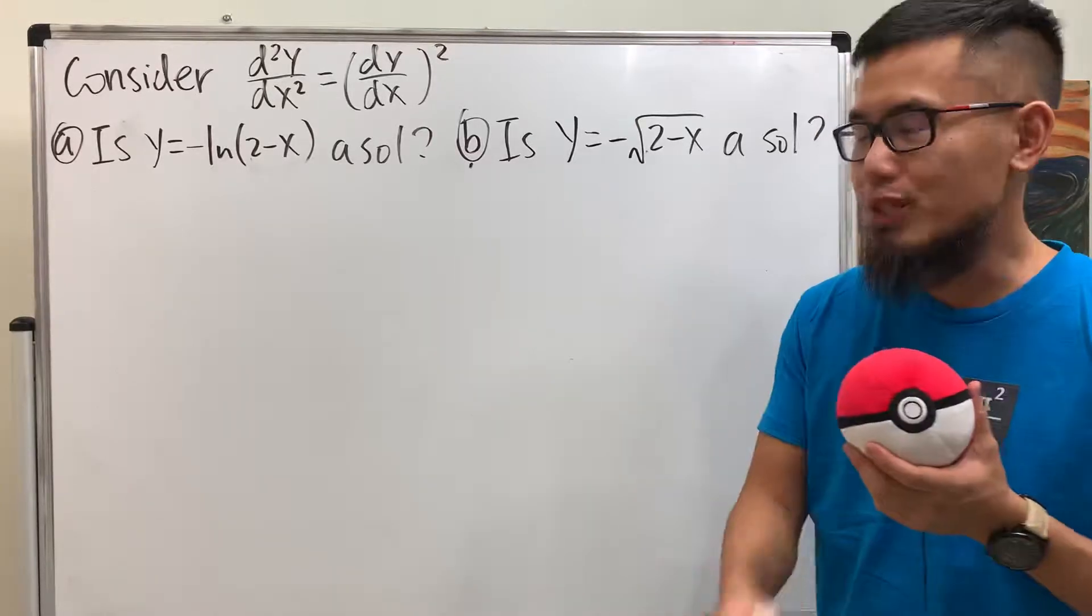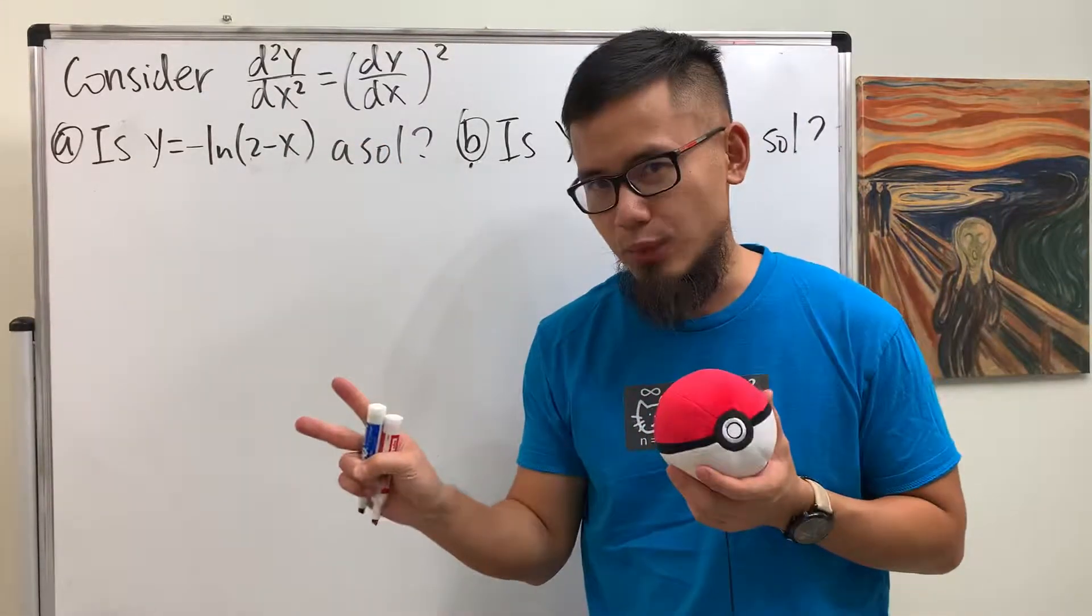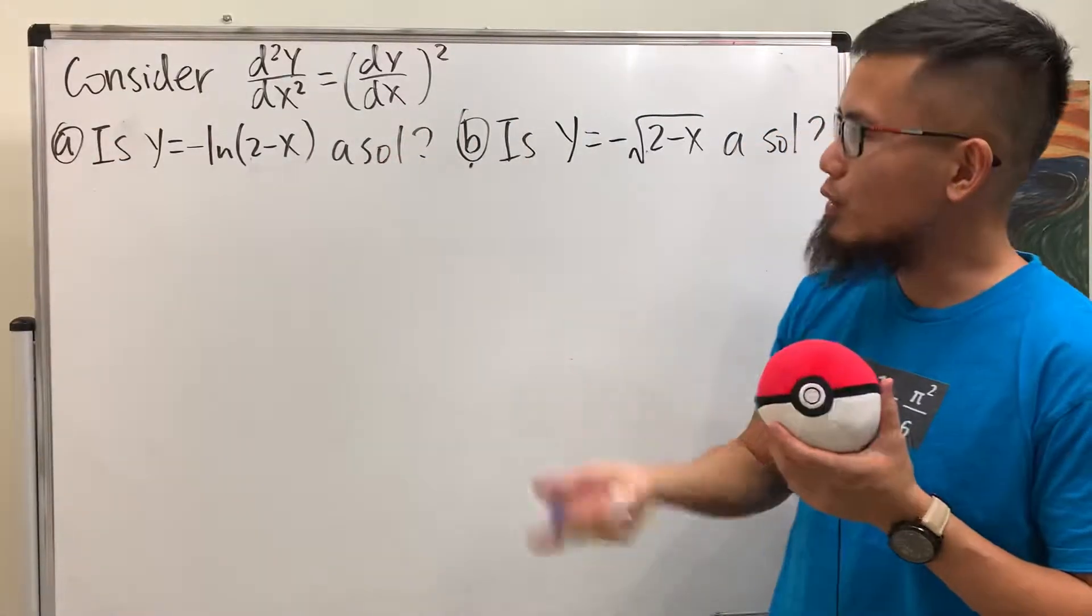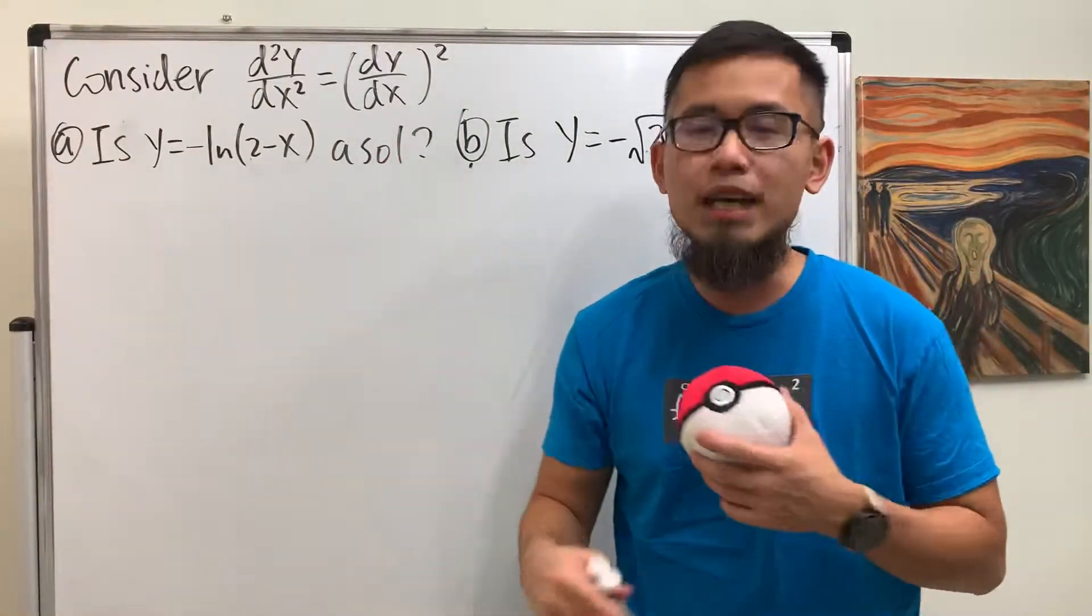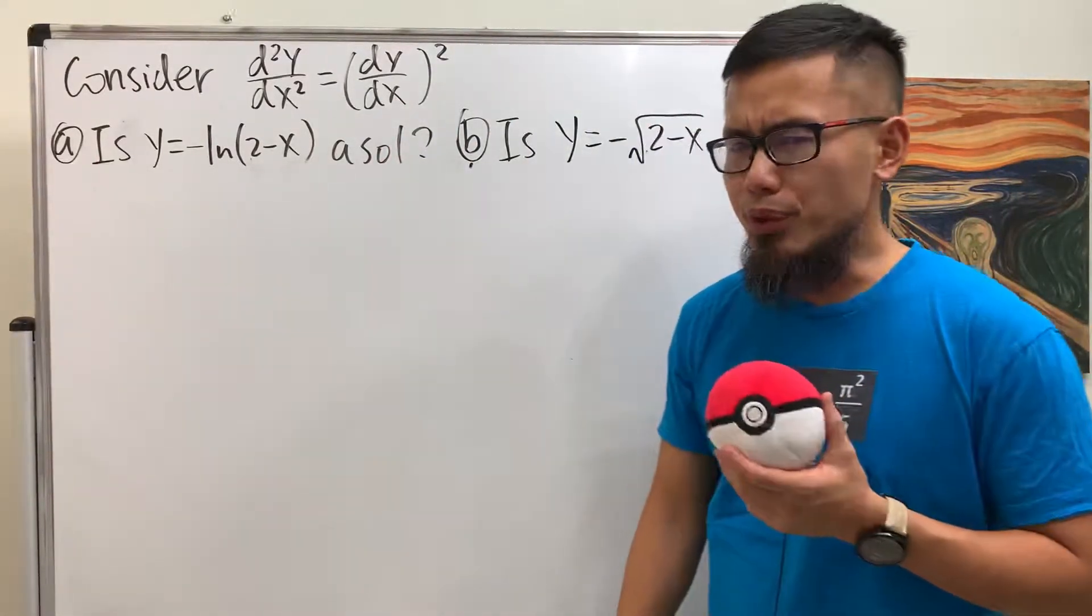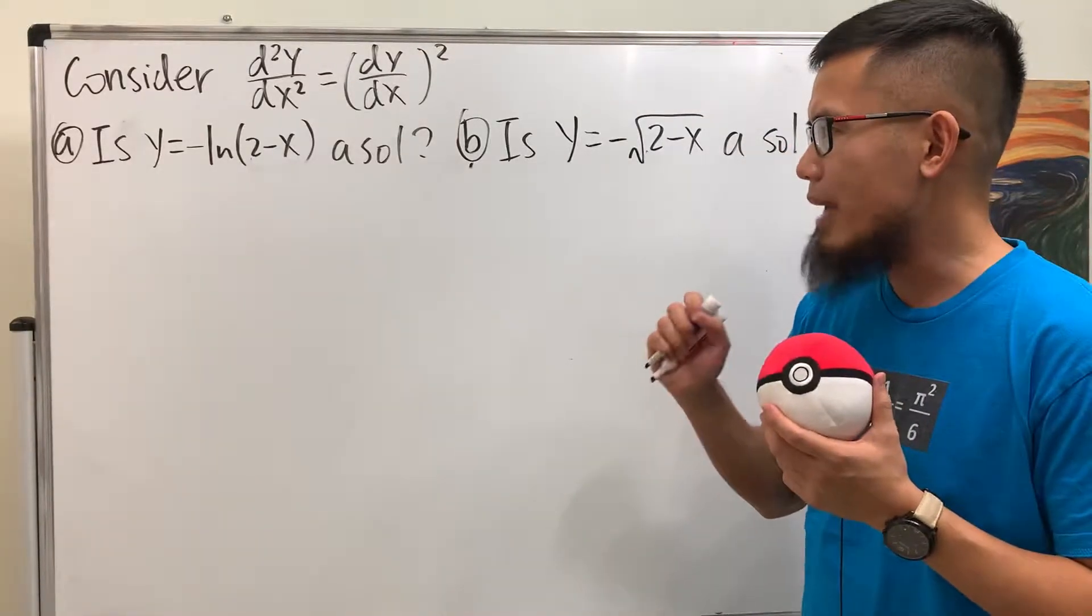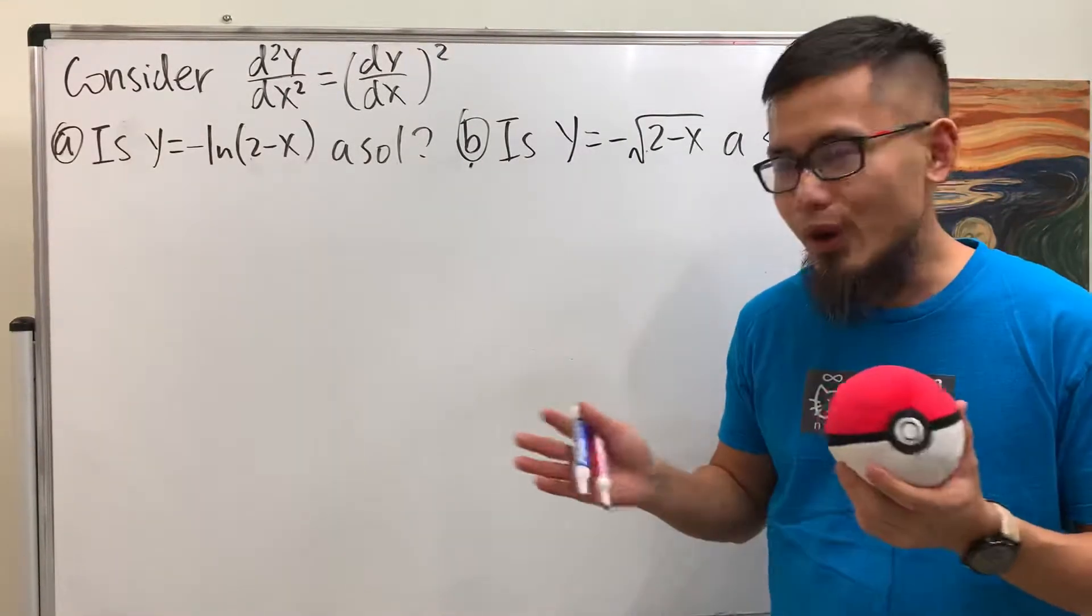But let me remind you guys, this right here means the second derivative, and this right here means the first derivative, you put that in the parentheses and you square that. Do you think that they are secretly the same every single time? Well, I don't know either, let's go ahead and check that out.